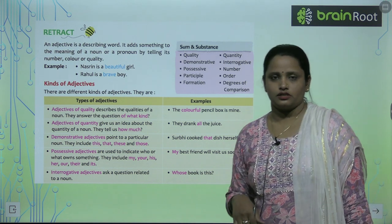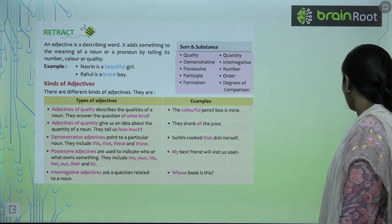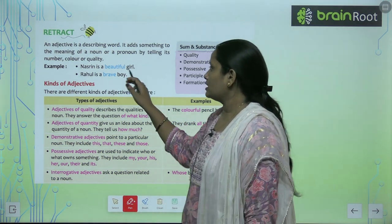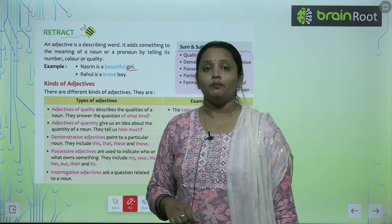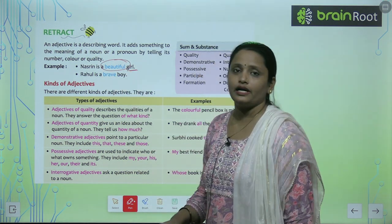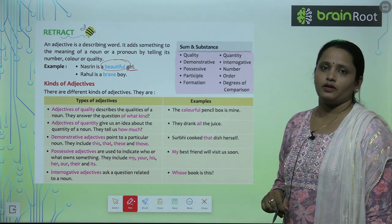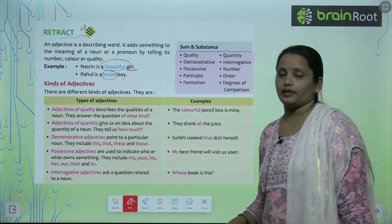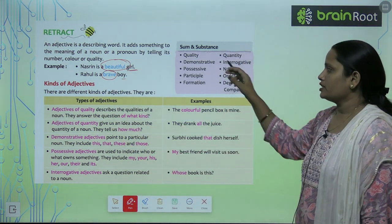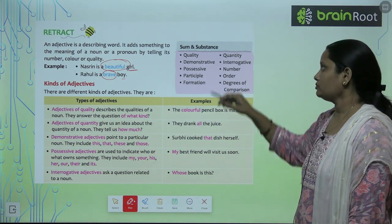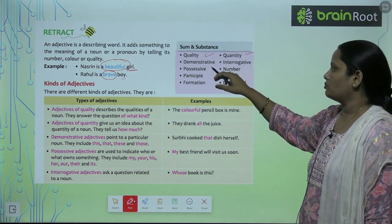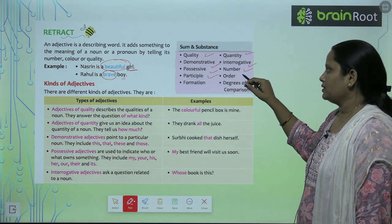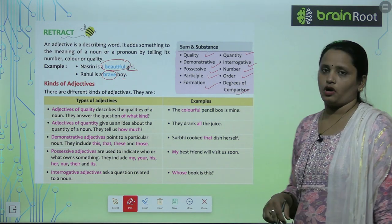For example, 'Nasreen is a beautiful girl.' Here the word 'beautiful' describes the noun Nasreen, so 'beautiful' is the adjective. Second example: 'Raoul is a brave boy.' Boy kaisa hai? Brave. So 'brave' becomes our adjective. In this chapter we will learn about quality, quantity, demonstrative, interrogative, possessive, number, participle, order, formation, and degree of comparison.